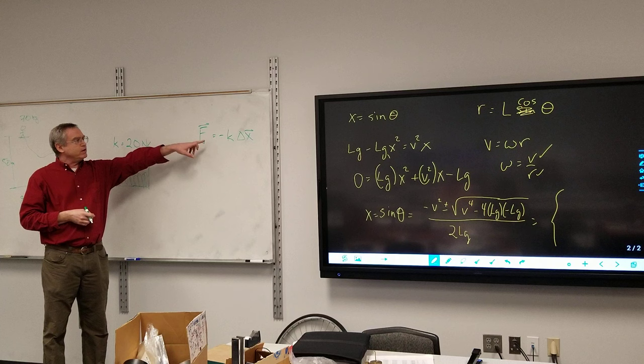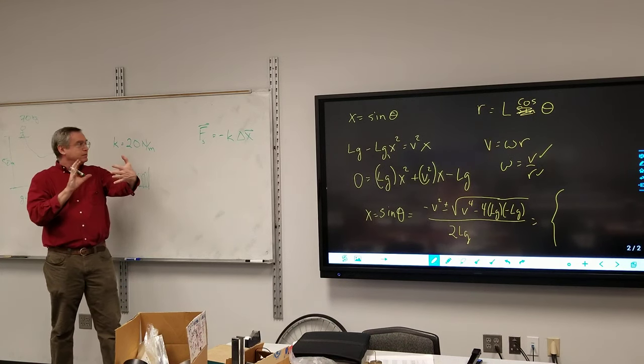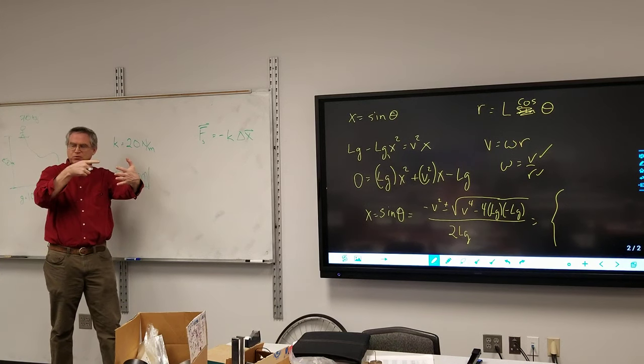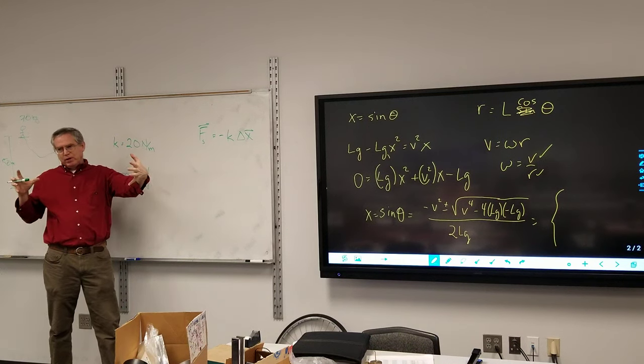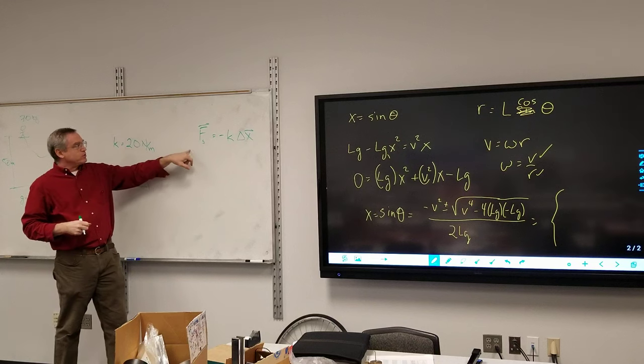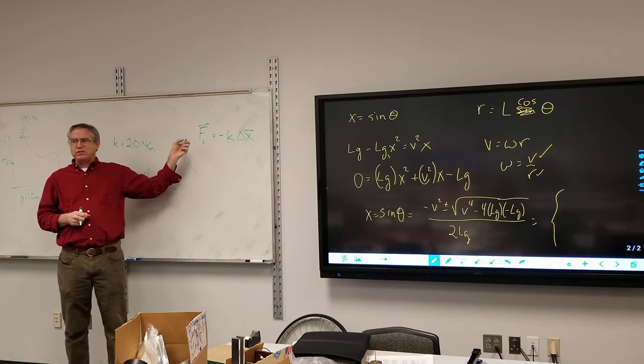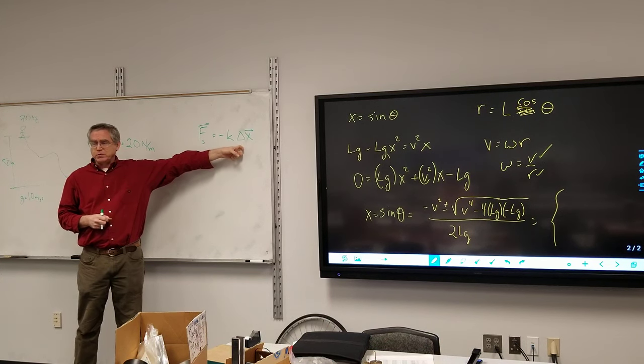The negative there says that if I press on a spring, so I compress it, the displacement is this way, but the spring is exerting a force that way, trying to get back to equilibrium. If I stretch the spring, then the displacement is this way, and the spring is trying to pull itself back towards equilibrium. So the force is always, the force that the spring exerts, or the ideal elastic material, is the opposite direction of the displacement. So it always wants to get back to equilibrium.